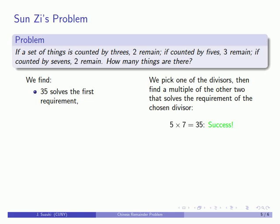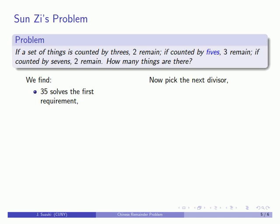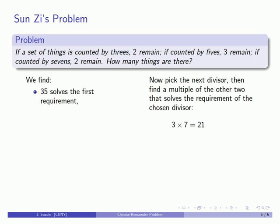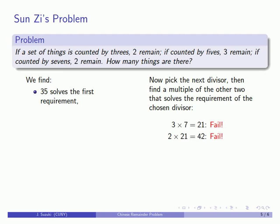Now let's move on to the next divisor, five. The product of the other two divisors, three times seven, is twenty-one. I want to find a multiple of twenty-one that solves the second requirement — that is, a multiple of twenty-one that leaves remainder three when divided by five. Twenty-one doesn't work. Two times twenty-one is forty-two, and divided by five that doesn't leave remainder three. Three times twenty-one is sixty-three, which does in fact leave remainder three when divided by five. So sixty-three solves the second requirement.